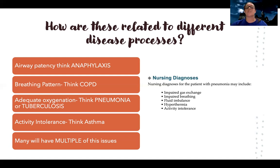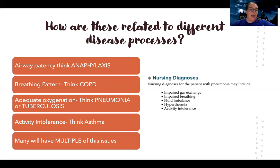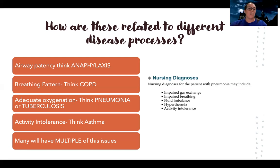Don't get too worked up trying to decide if breathing is more important than oxygenation in a given scenario — it depends on the situation, and questions shouldn't be that hard. A better approach: for each priority, ask yourself what medications you give and what you can do as a nurse. For airway patency — what can I do? For breathing pattern — what can I do? For adequate oxygenation? For activity intolerance? Asthma hits all of these priorities, but the interventions differ by priority.